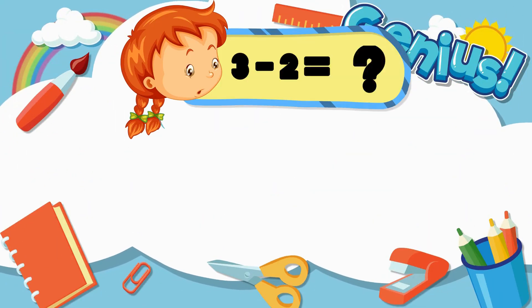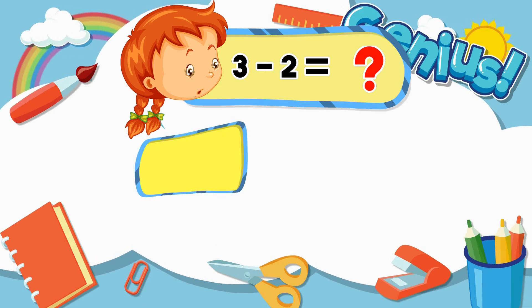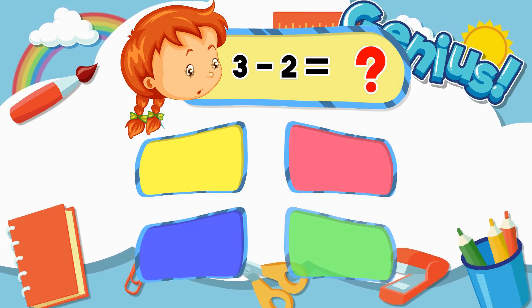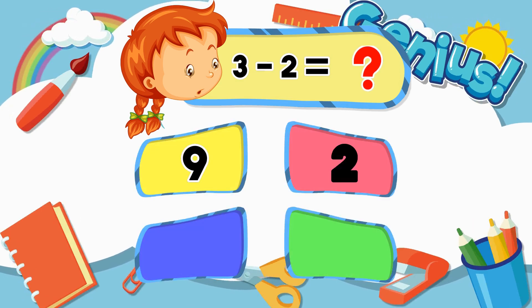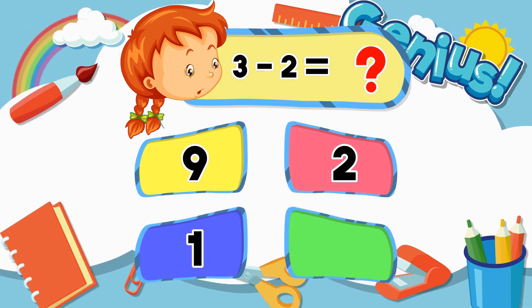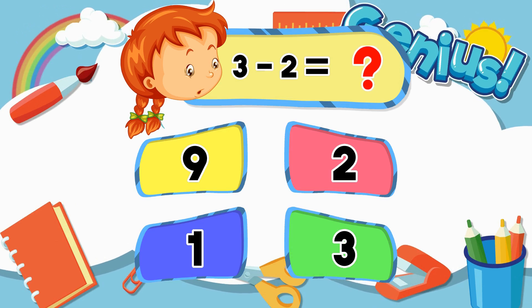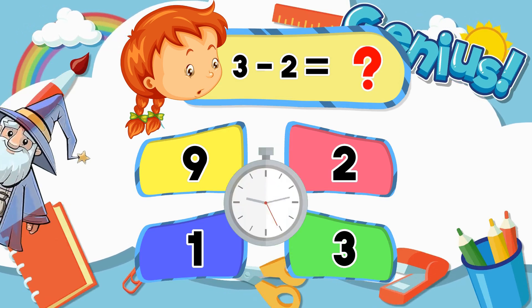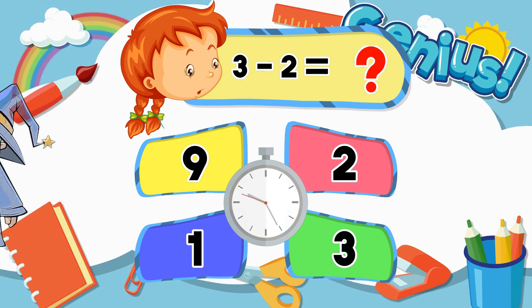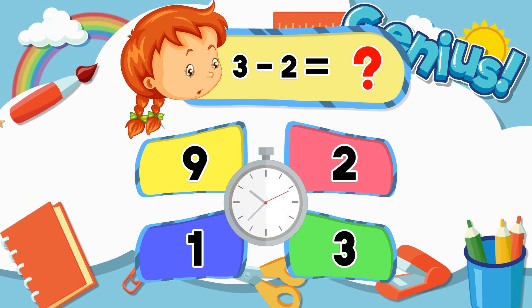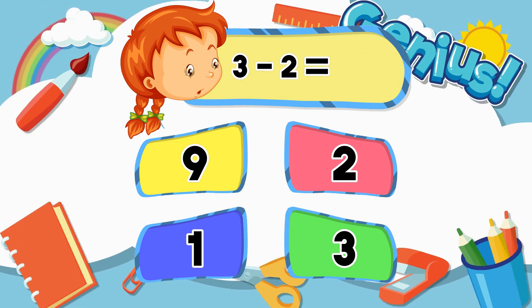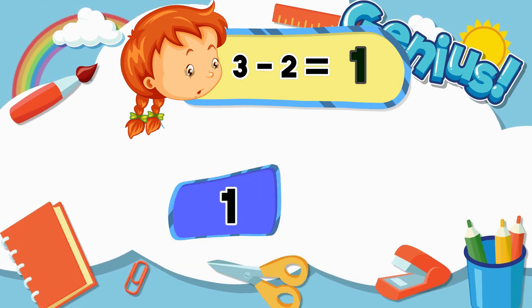What is 3 minus 2? Options: 9, 2, 1, 3. Answer: 1.